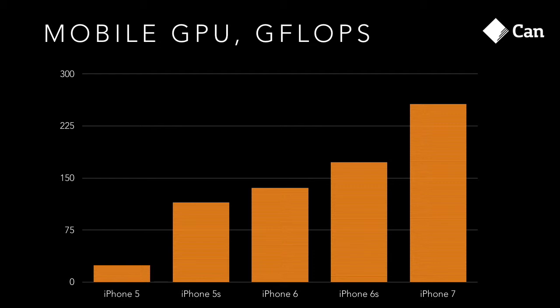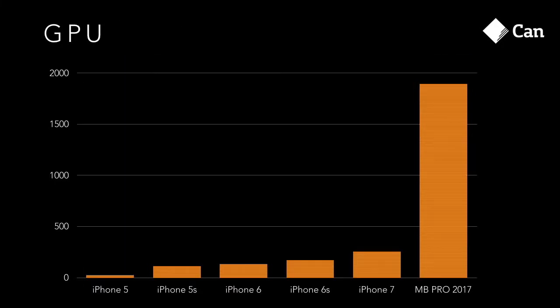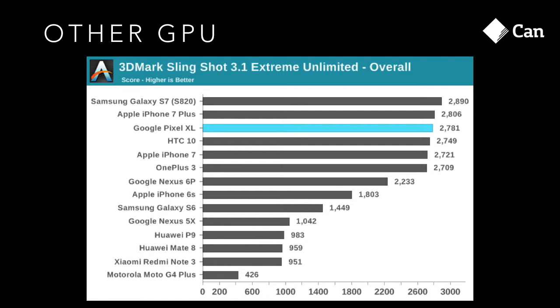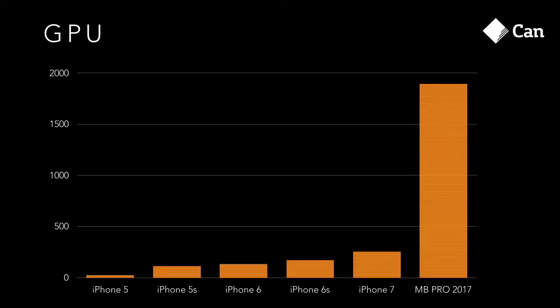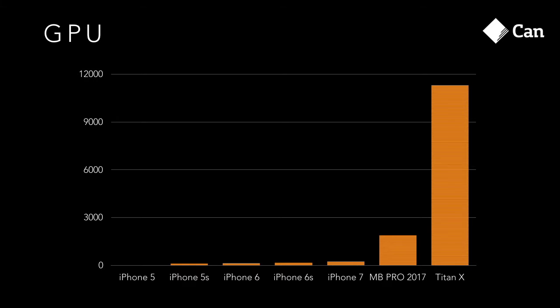Let's get back to basics and talk about mobile GPUs. Looking at GPU power in gigaflops over the years — theoretical peak, not benchmarking — the iPhone 7 is roughly double what the iPhone 5s had, and that only happened over about three years. So the computational power of mobile GPUs is growing pretty fast. Android phones are pretty similar. But if we compare to a MacBook Pro, there's a significant gap — and if we put the Titan X GPU up there, you can barely even see the iPhone 5 and 7 performance.